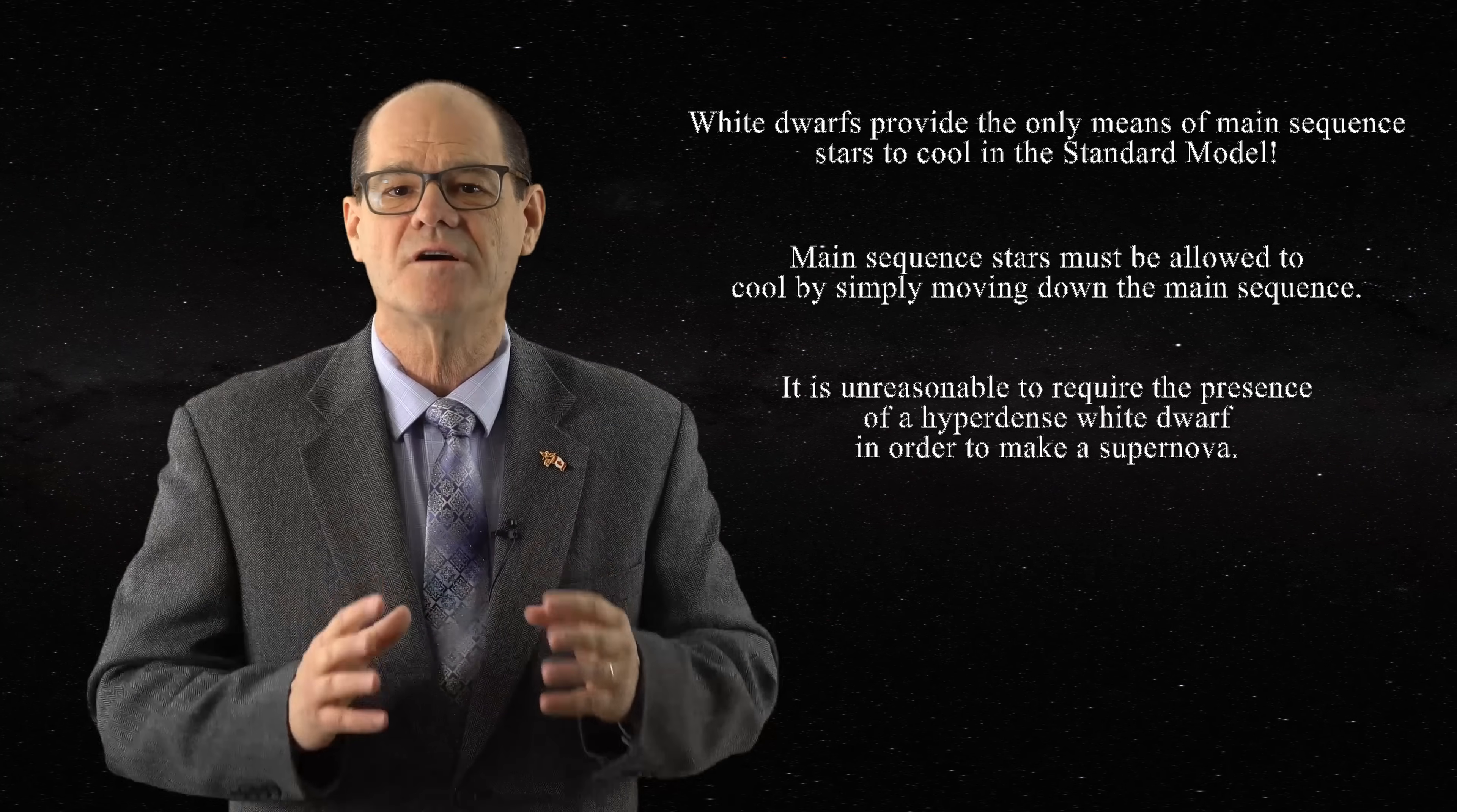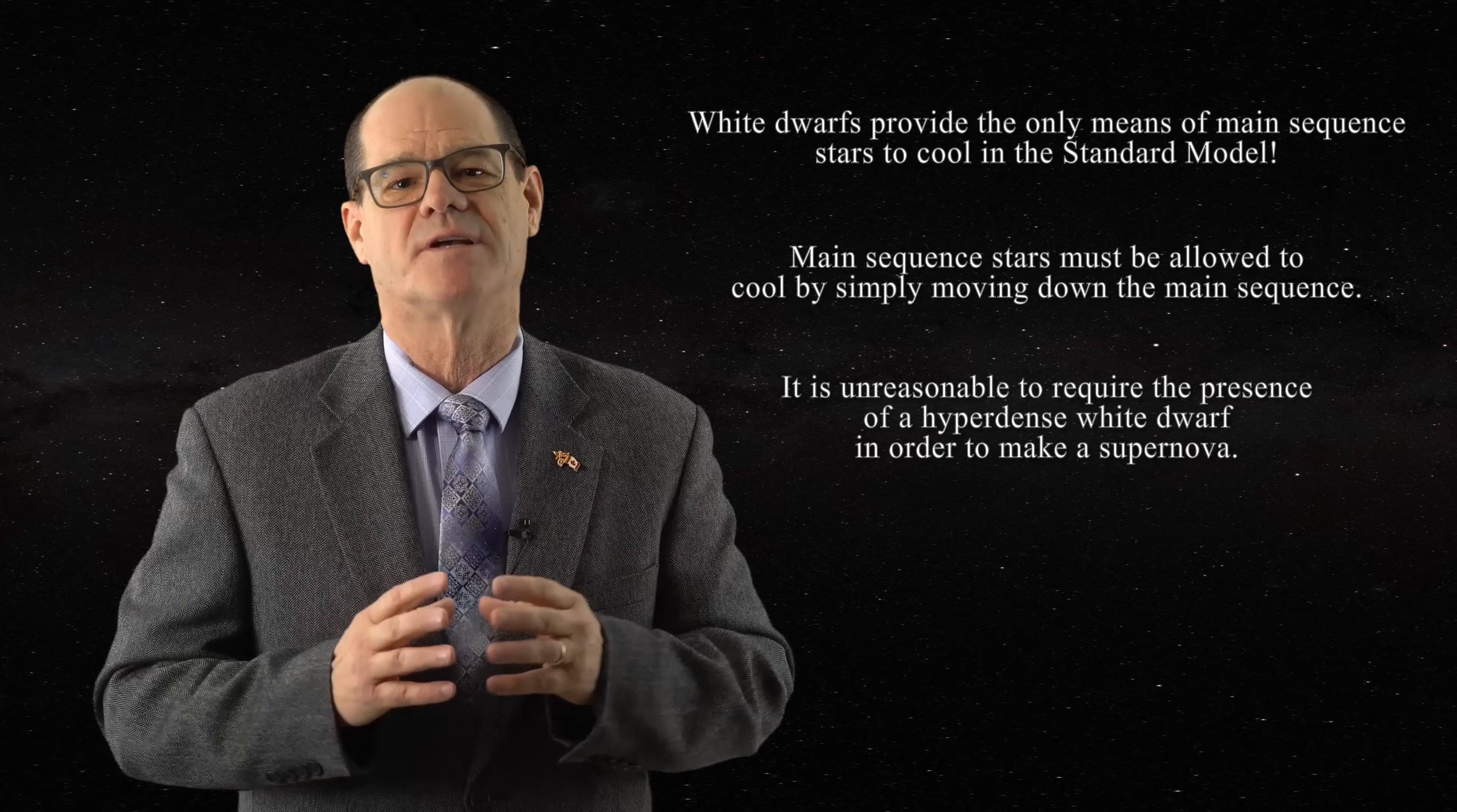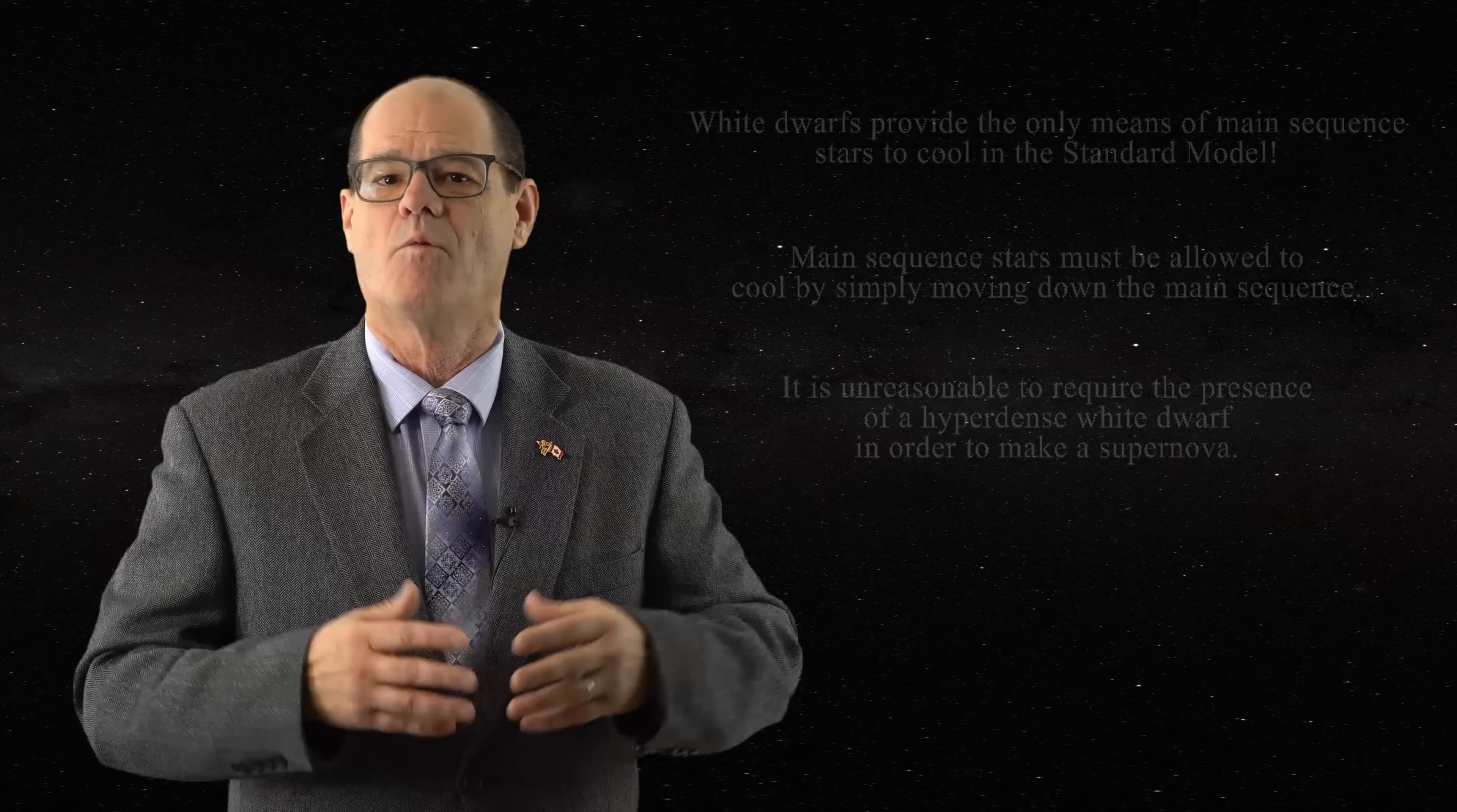Once again, stars have positive heat capacities and main sequence stars should cool by moving down the sequence in the HR diagram. They do not execute the wild gymnastics proposed in the standard model. The same will be true for more massive stars believed to collapse into a black hole in order to deal with their negative heat capacities.